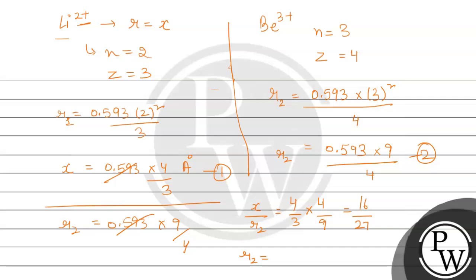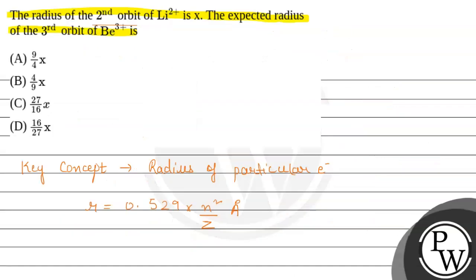So rearranging, r2 will be 27x over 16. According to the given options, 27x upon 16